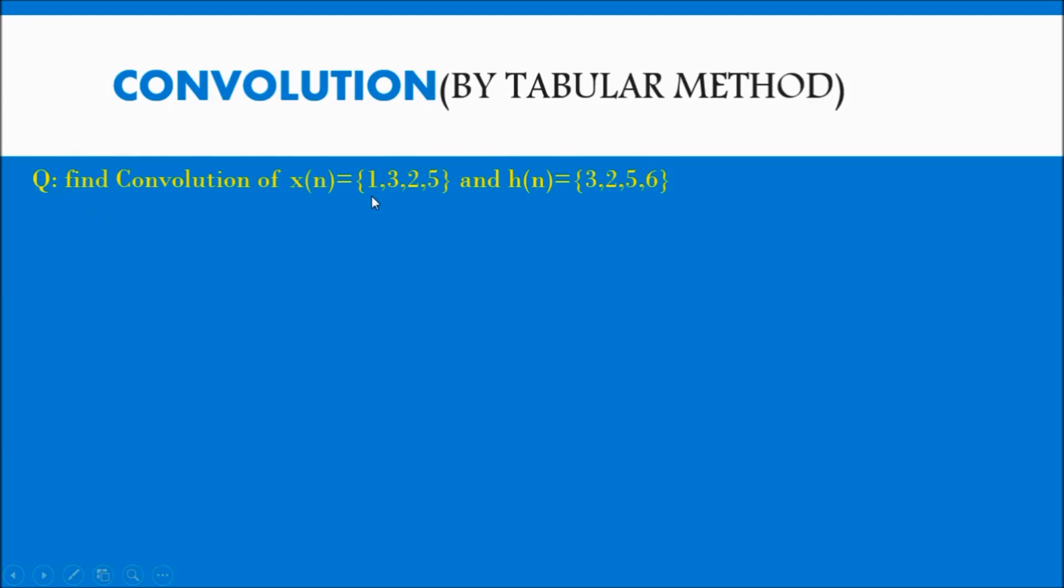Given x of n is 1, 3, 2, 5 and h of n is 3, 2, 5, 6. We have to find the convolution by tabular method. It is the shortest method or shortcut method for finding the convolution.